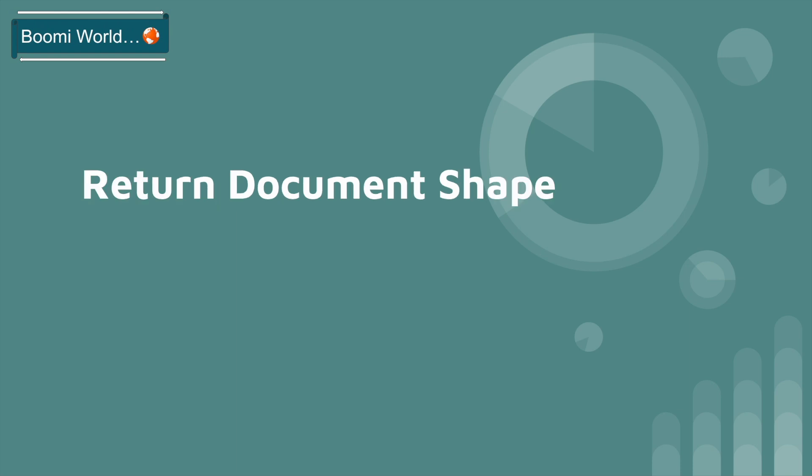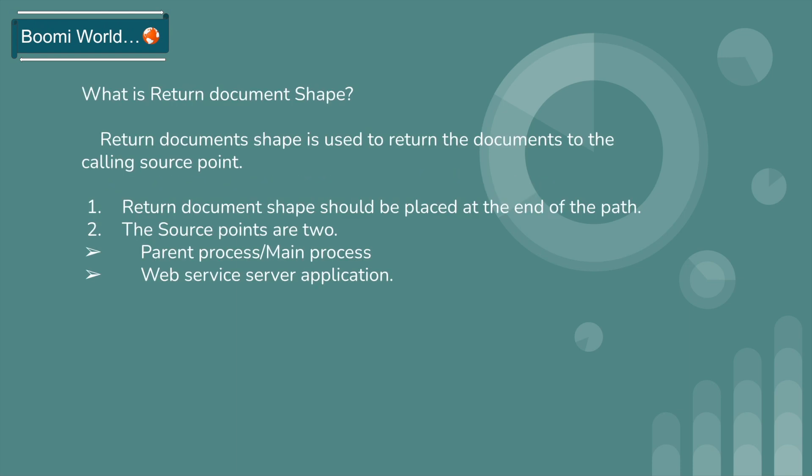So first we look into what is the Return Document shape. The Return Document shape is used to return the documents to the calling source point. The Return Document shape should be placed at the end of the path.